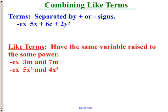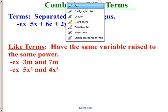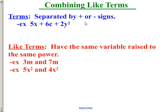You can see from the definition that terms are separated by addition or subtraction signs. For example, when you look at this particular expression, we have three terms: 5x is a term, 6c is a term, and 2y squared is a term.